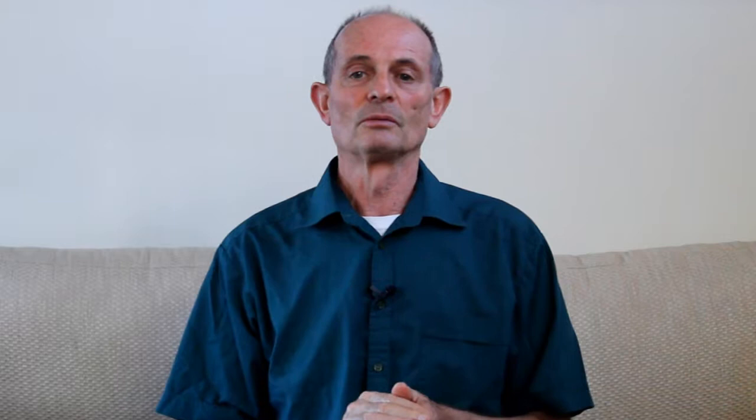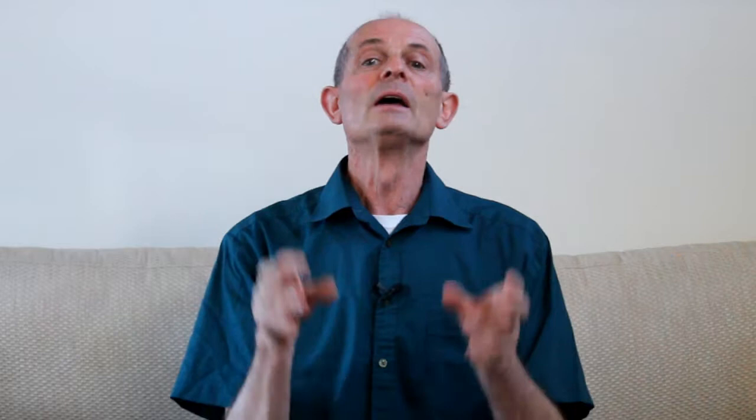The system has to have effective flows of energy, matter, and information between the parts. The parts need to share in a constant flow of matter, energy, and information between them for them to thrive, and that flow must be sufficiently healthy, consistent, and free of toxic matter. It also needs parts that obey the rules adequately — the parts must be willing to align their behavior to that of the whole system, following rules prescribed reasonably well enough. Often some parts will break or bend the rules, but there's usually enough room to cope with that.